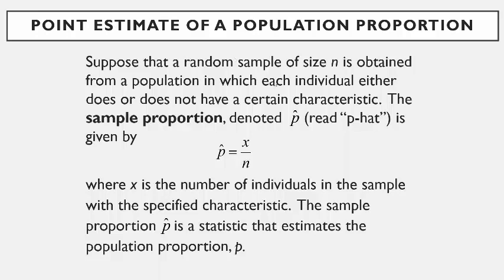The sample proportion, denoted as p-hat (a little caret sign over p), is given by p-hat equals x divided by n, where x is the number of individuals in the sample who have that specified characteristic. The sample proportion p-hat is a statistic that estimates the population proportion p — it's an estimate for the proportion of individuals in a population that have a certain characteristic.